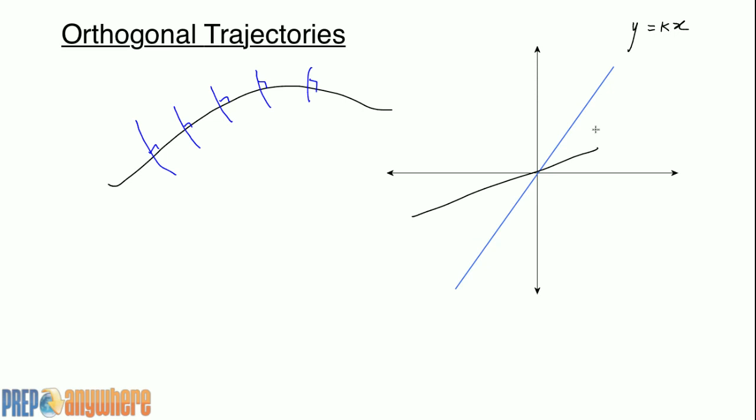So it can be that one, it can be this one, it can be this one. So what kind of graph will always be intersecting with these lines at 90 degrees? It's this - a circle.